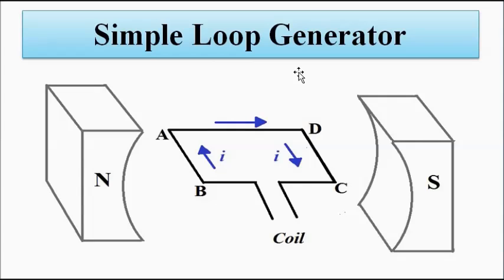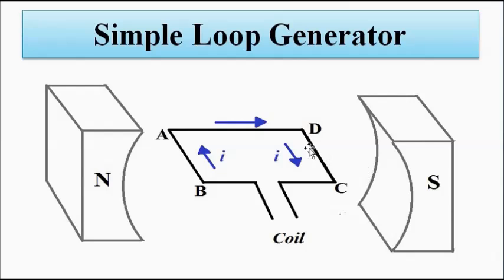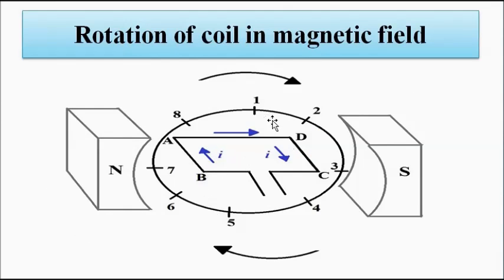The simple loop generator had north and south poles as the source of magnetic field, and a rectangular shaped coil with coil sides AB and CD. When coil side AB is towards the north pole, the current flows in one direction; when towards the south pole, it flows in the opposite direction. The coil rotates in a clockwise direction in the magnetic field.